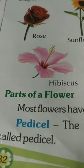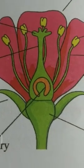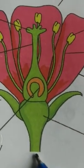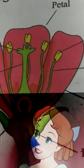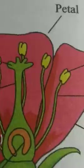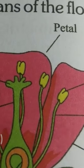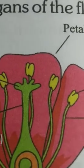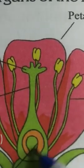Now we will discuss the parts of a flower. The stalk of the flower is called pedicel. The swollen part is known as thalamus. Then there are green sepals, colored petals, the male reproductive organ — stamen or androecium — and the female reproductive organ — pistil or gynoecium.